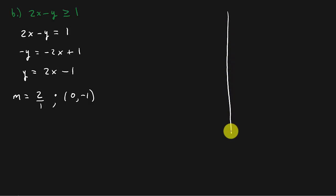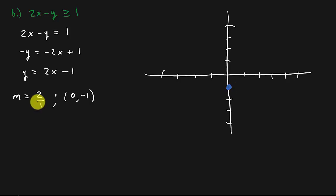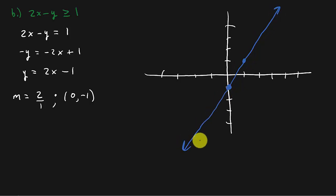Let's graph that. Plot the y-intercept at (0, -1), then use rise over run to get the next point — go up 2, over 1. Draw the line. Notice on this problem I drew a solid line because it's greater than or equal to. That's a solid line.